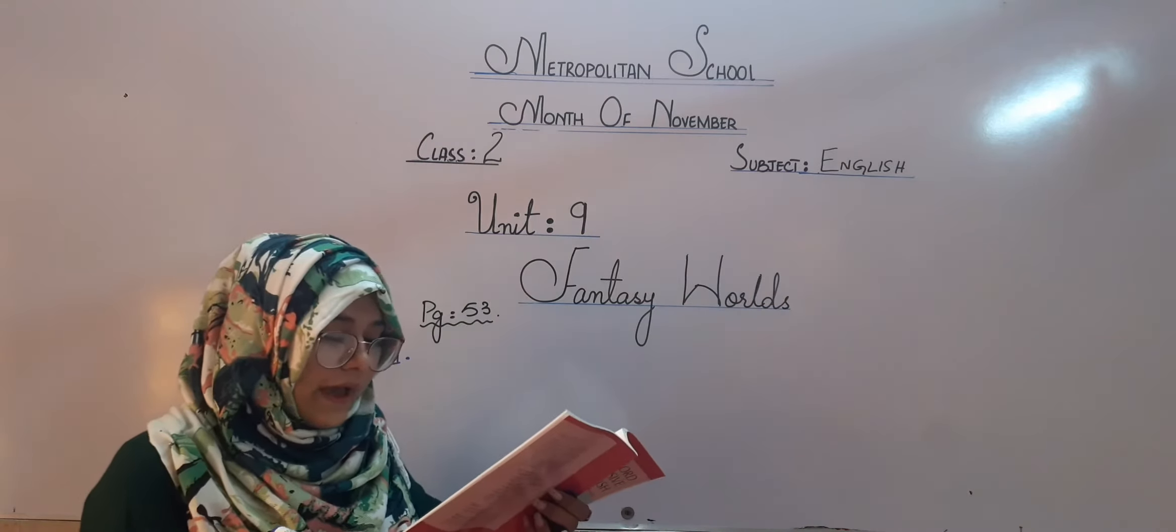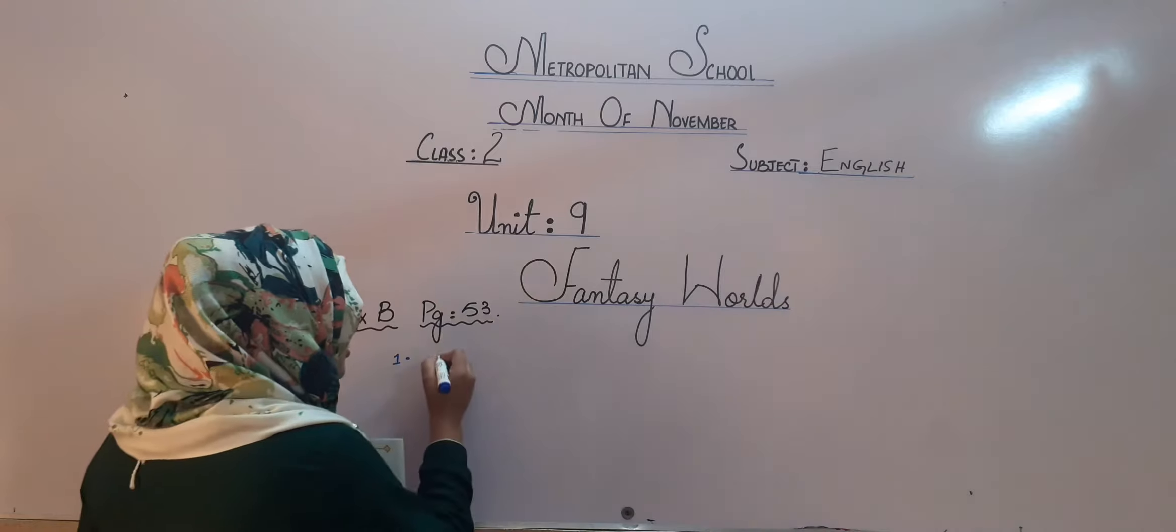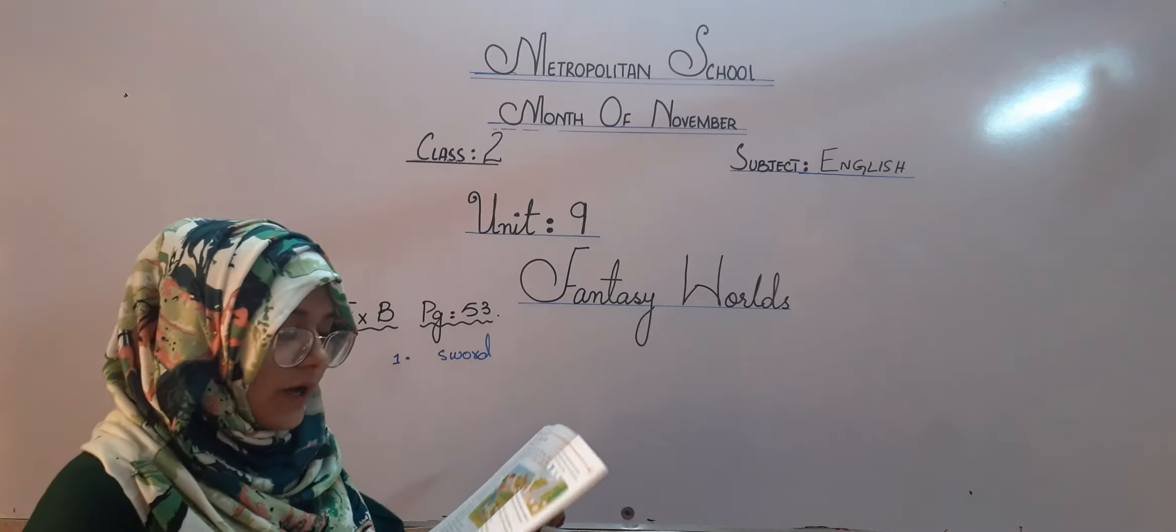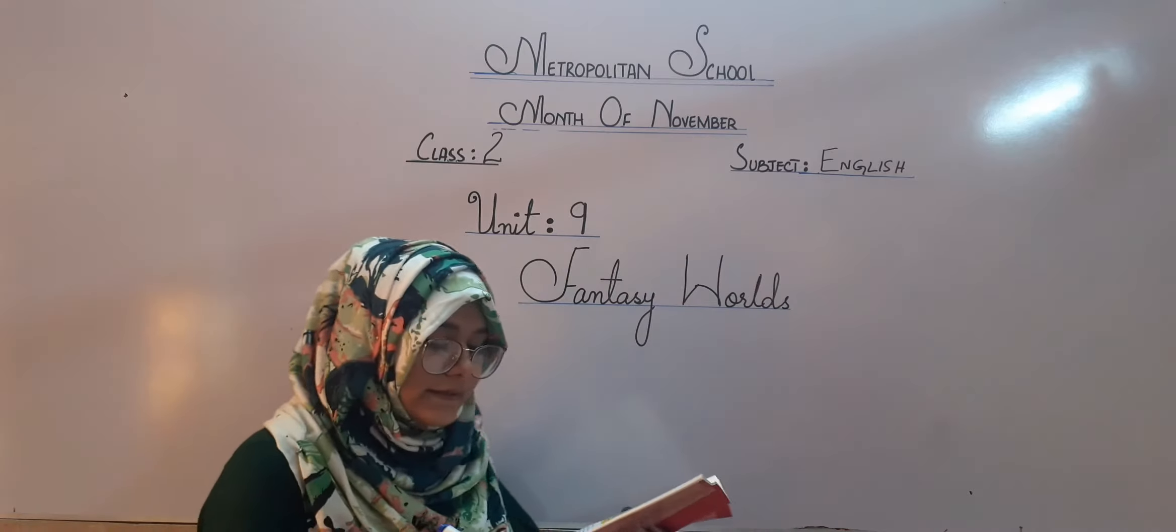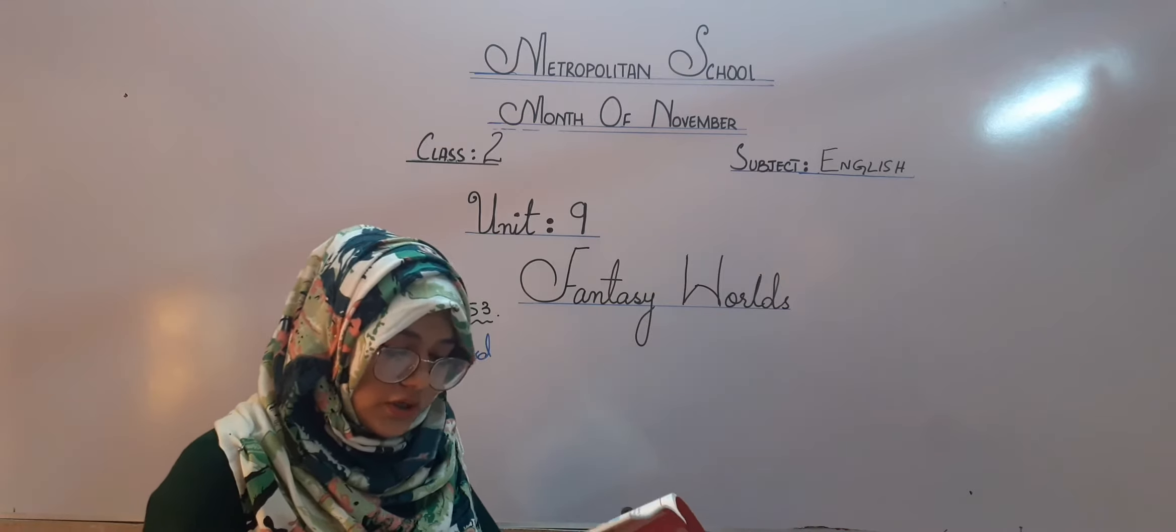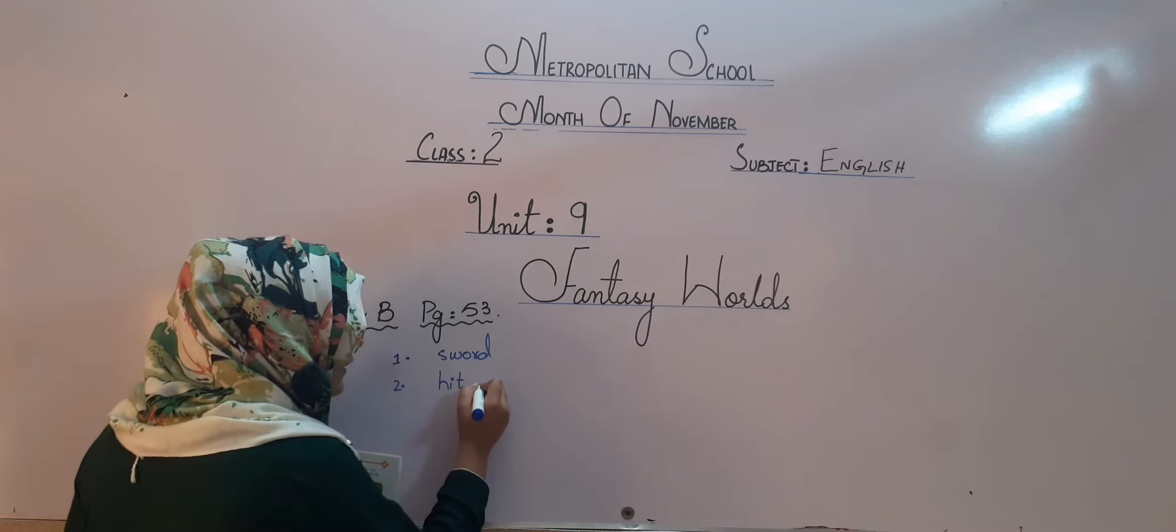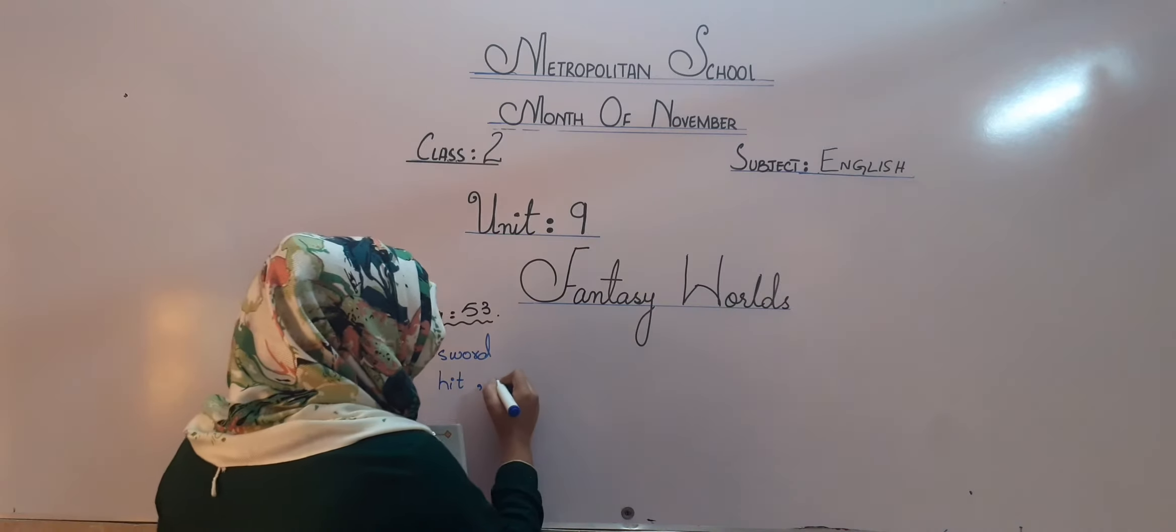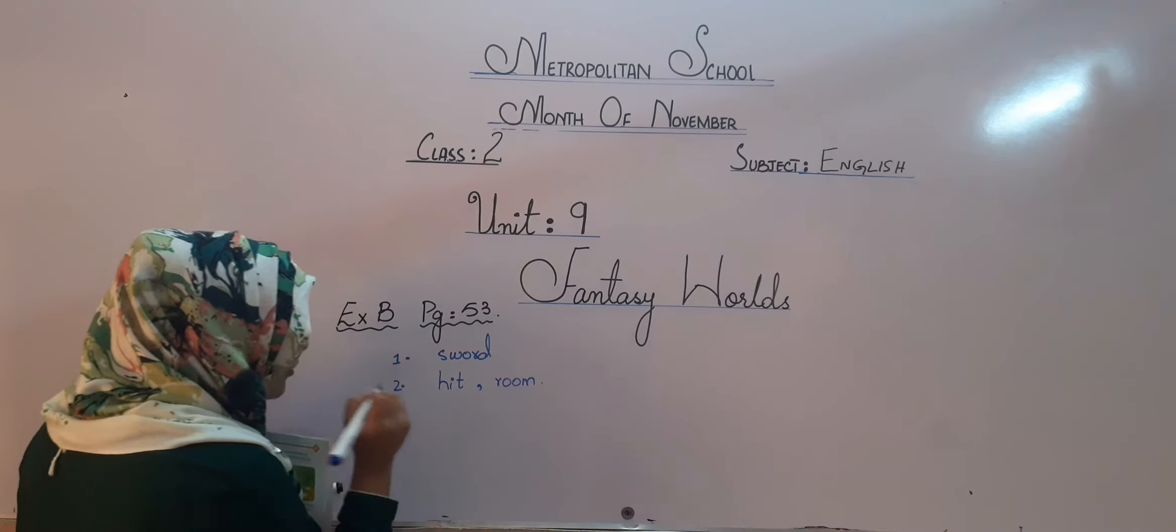I am going to circle the first one which is already done in your book. It is Noor had a gun, sword or stick. What was he having? He was having a sword. You have to circle the word sword. After that, the second one is he dashed things with his sword. So, his father sent him to his what? He was hitting the things. So, the first blank will be hit and in the second box you have to circle room because his father sent Noor to his room.